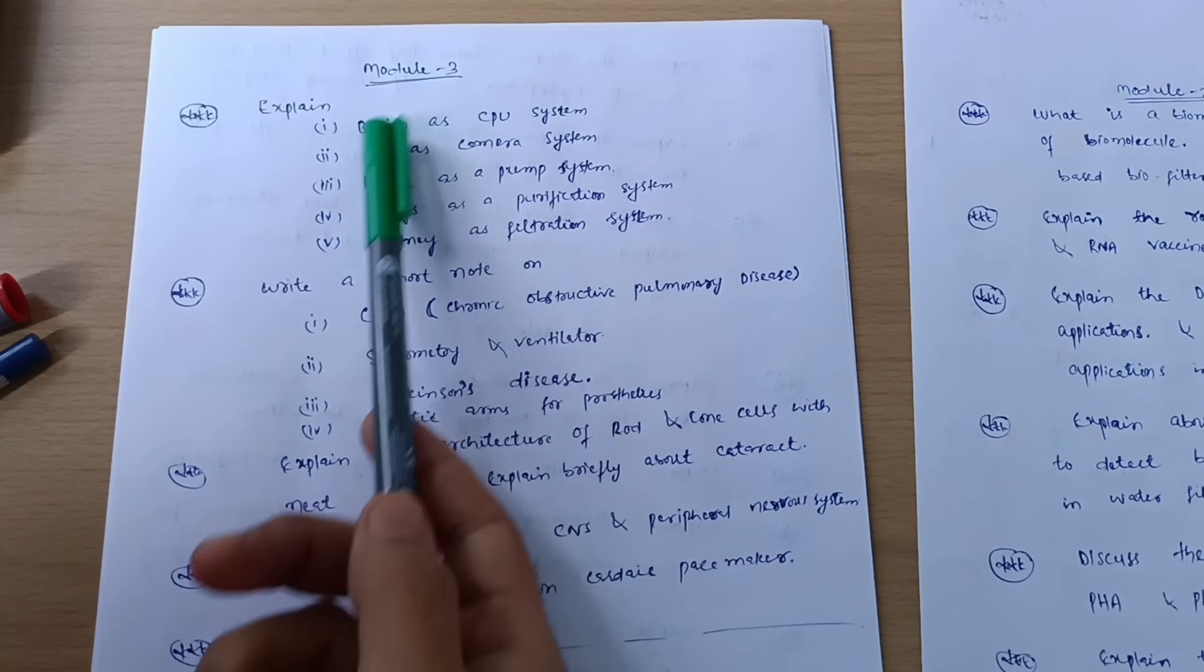Next is Module 3. These are super important questions - definitely you should go through it. Explain brain as CPU system. They will ask you: explain brain as a CPU system and eye as a camera system, heart as a pump system, lungs as a purification system, and kidney as filtration system. These five you should surely go.